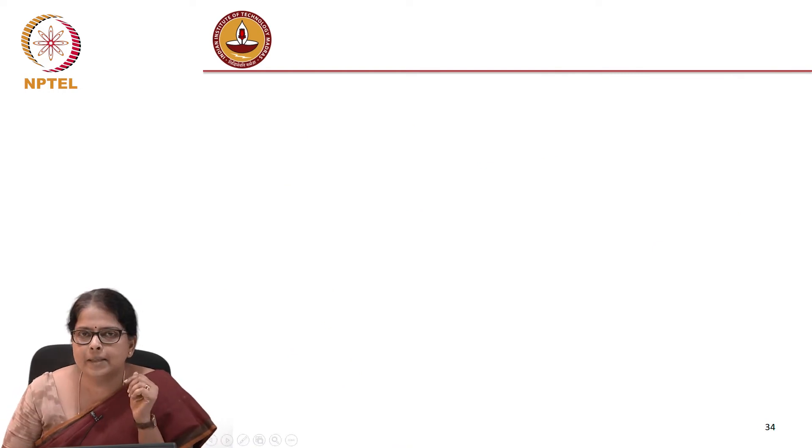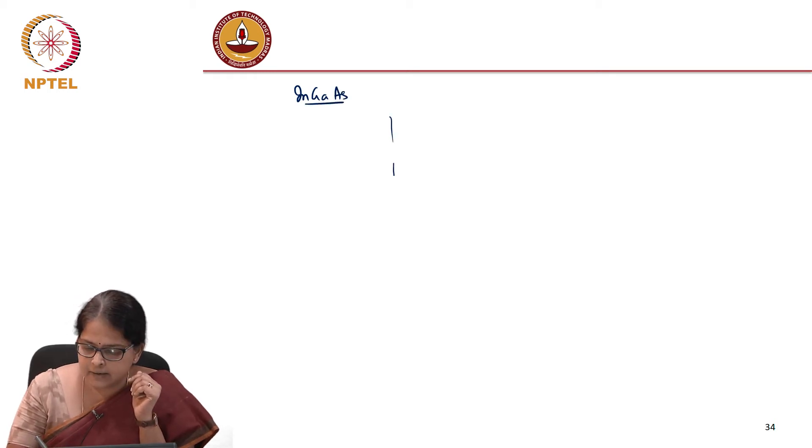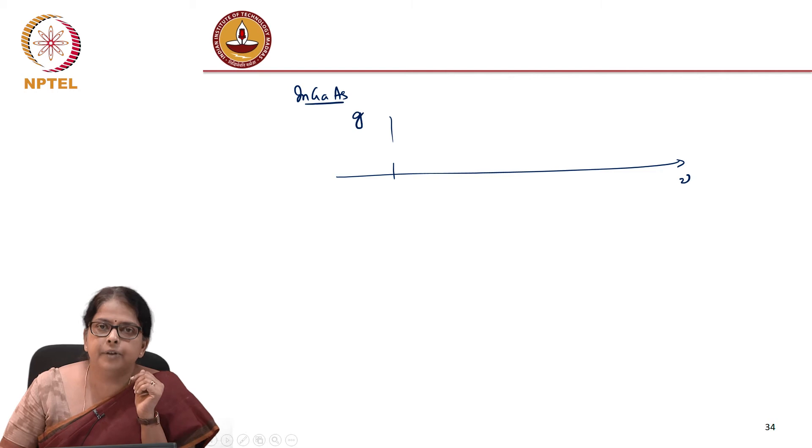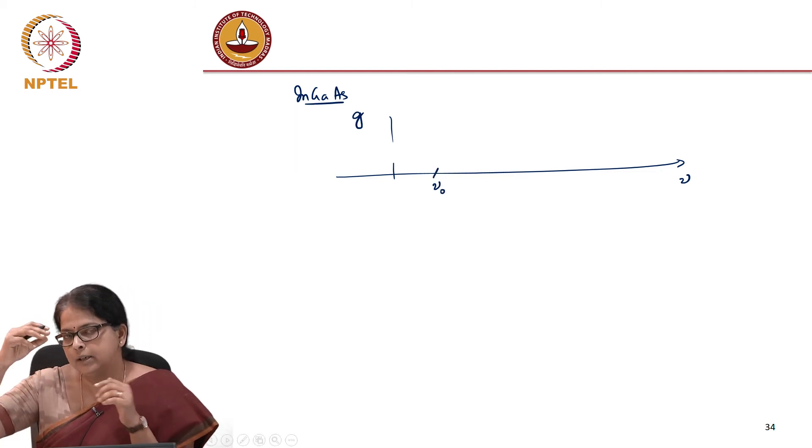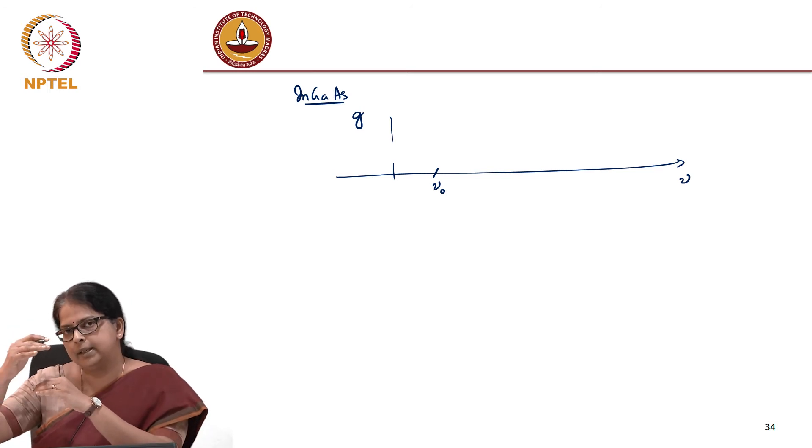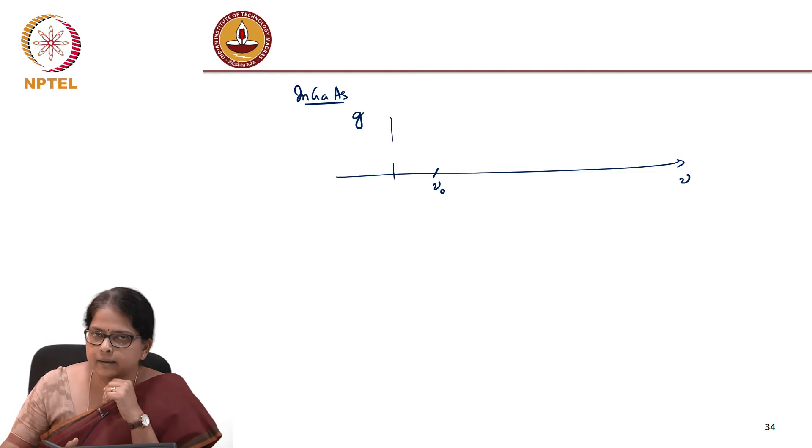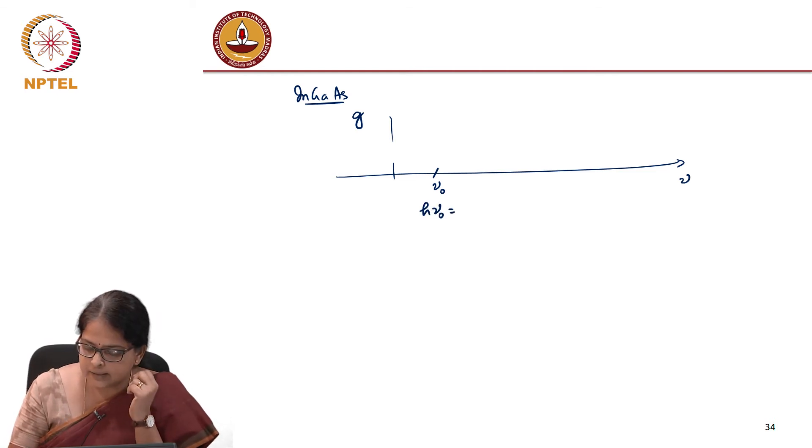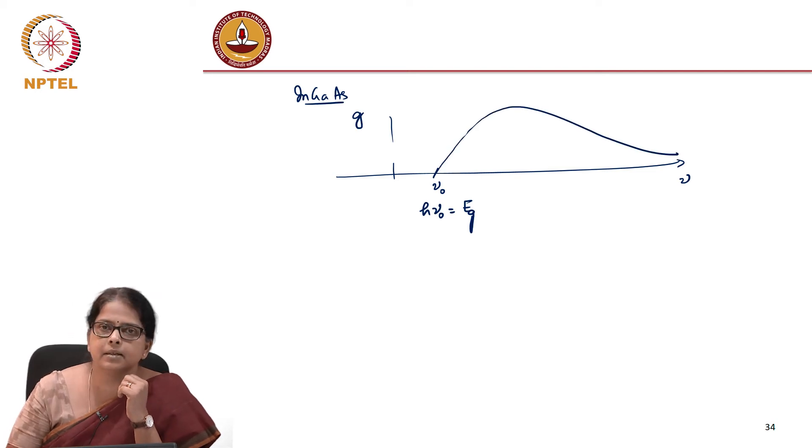What really happens in a laser? Let us take the case of an indium gallium arsenide kind of semiconductor material. We have seen when we did LEDs that if you calculate the gain coefficient as a function of frequency, there is a lower cutoff frequency corresponding to the band gap. That is the smallest frequency that the system can emit.